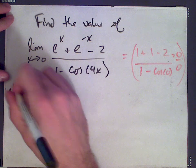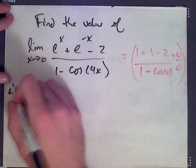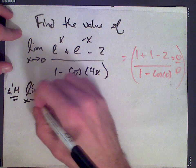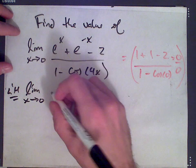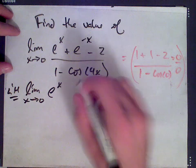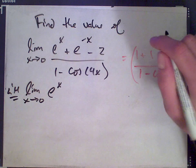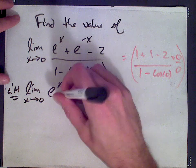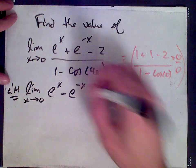According to L'Hopital's rule, we take the derivative of the top and the derivative of the bottom. We get e to the x. Derivative of e to the negative x is e to the negative x times negative 1, because that's the derivative of the exponent. Minus e to the negative x. Derivative of 2 is 0.